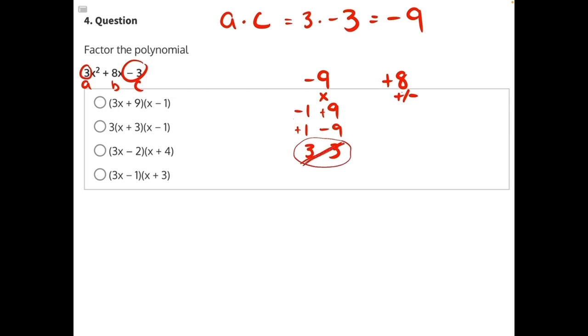Looking here, negative 1 plus 9 would give us a positive 8. 1 minus 9 would give us a negative 8, so this option does not apply. So now that we have our factors that multiply together to give us negative 9 and add together to give us positive 8...